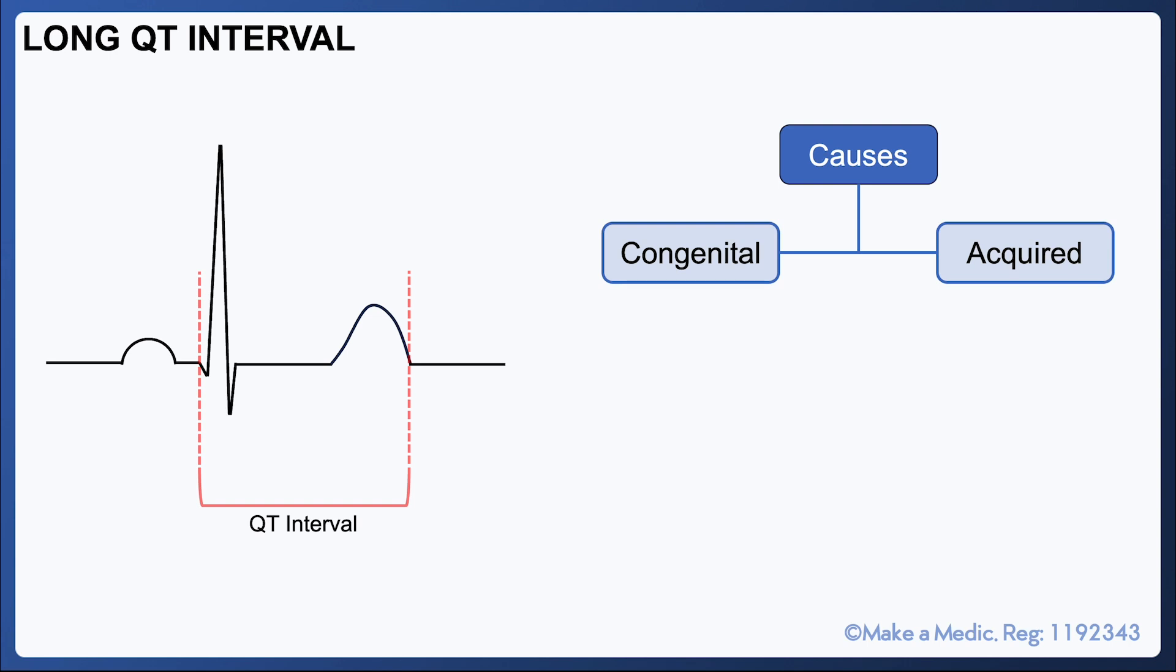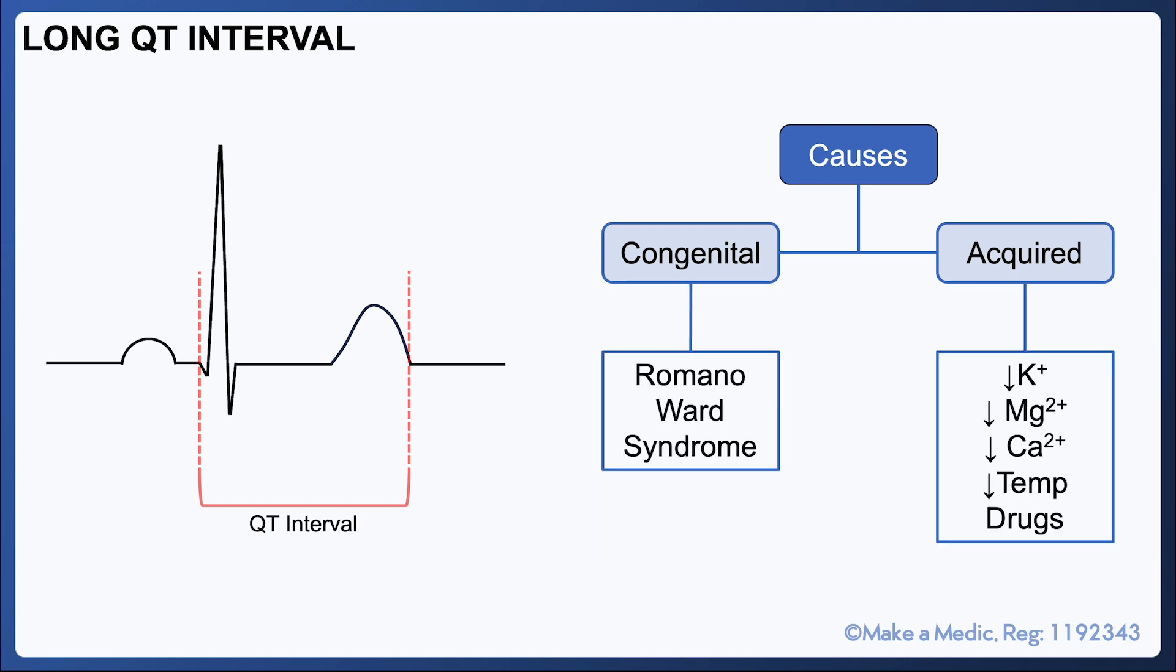The causes of long QT syndrome can be inherited or acquired. Romano-Ward syndrome is the most common congenital cause of long QT syndrome and it is caused by mutations in the genes encoding various ion channels that are involved in the cardiac action potential.